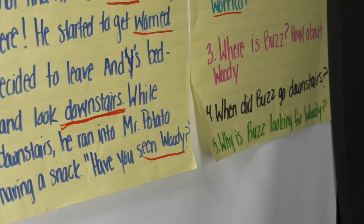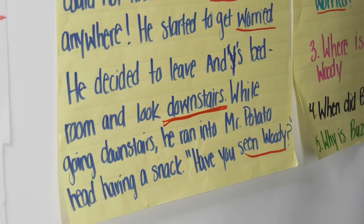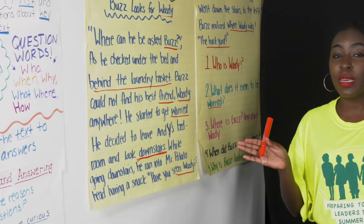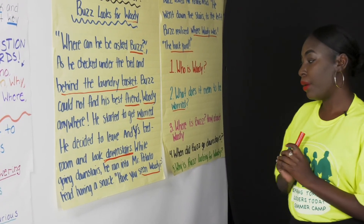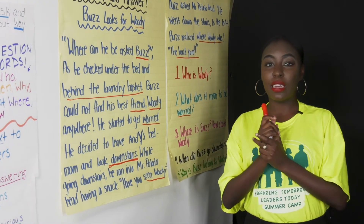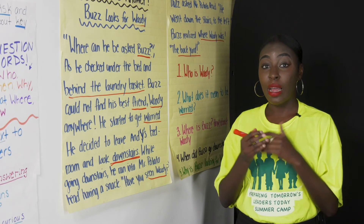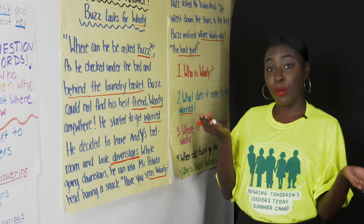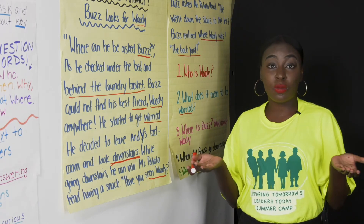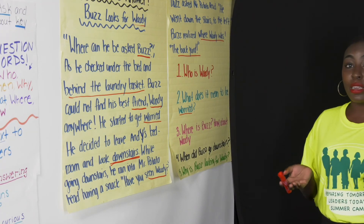Number five: Why is Buzz looking for Woody? This is a question where we have to make a prediction. Yesterday we talked about what it means to predict, which means to tell the future. Why is Buzz looking for Woody? Is it possible he wants to play with Woody — maybe they had a play date? Or maybe he's looking for him because he's worried. Those are all options for why Buzz might be looking for Woody.